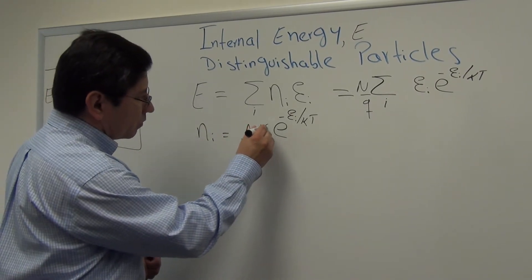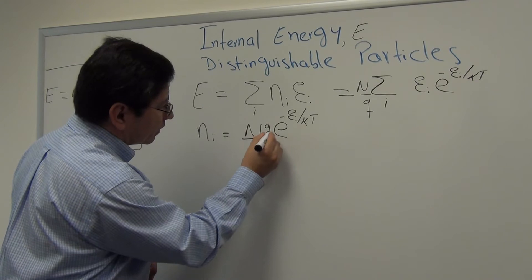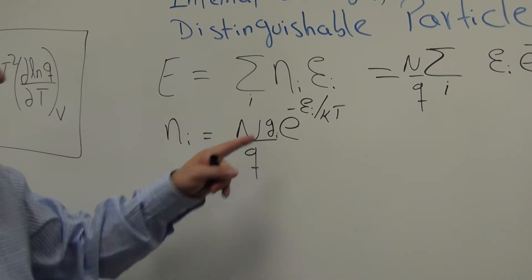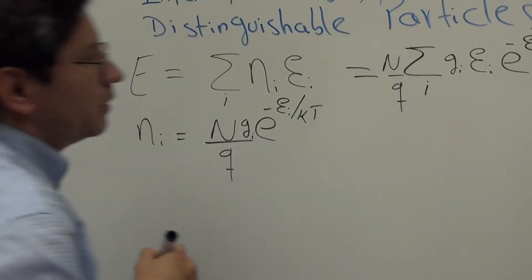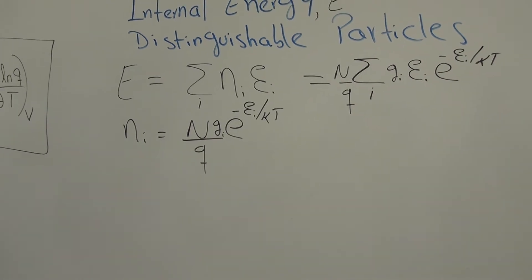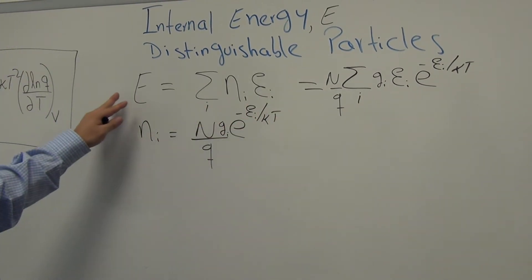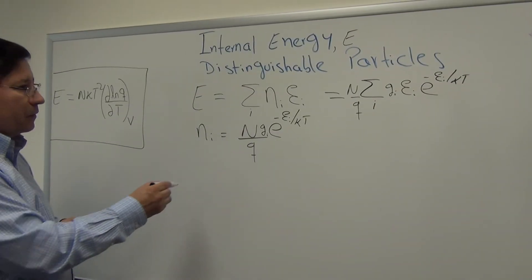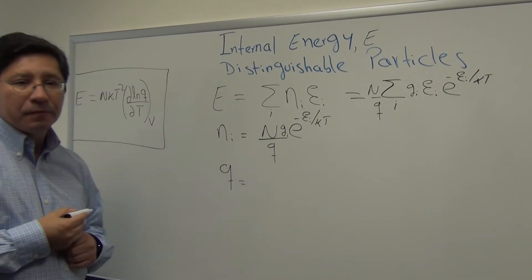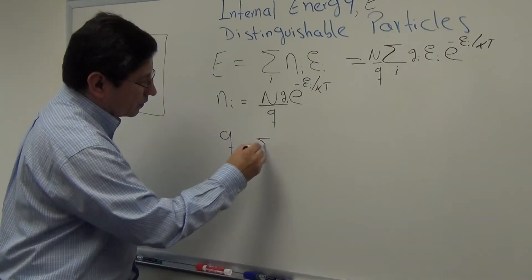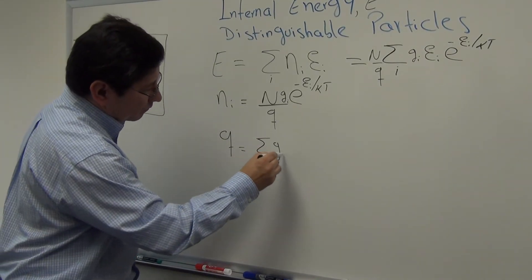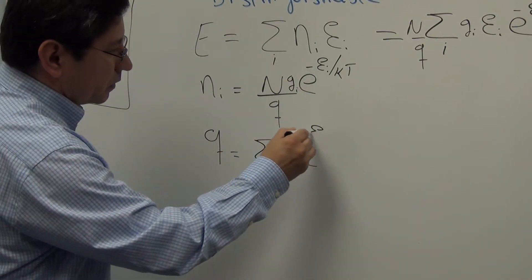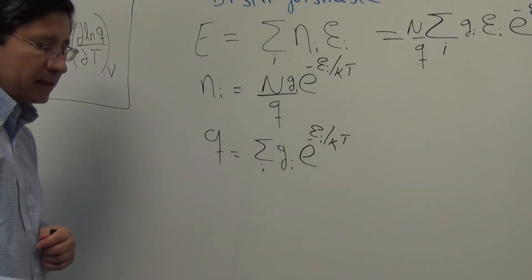So how do we account for degeneracy? Well, we use this little or lowercase g sub I. So that means this g means the degeneracy of the energy state Ith. So now with this in mind, we can put it back here. So this is our expression. So we have learned not much, but at least we have some ways that connect E with Q. What else can we do? Well, recall that Q is itself defined as the summation of GI, E minus EI over KT. That in itself is Q.